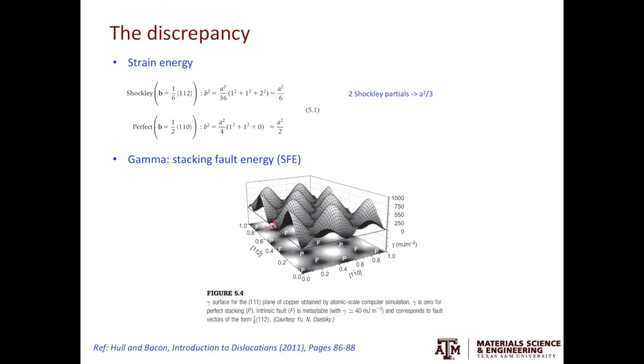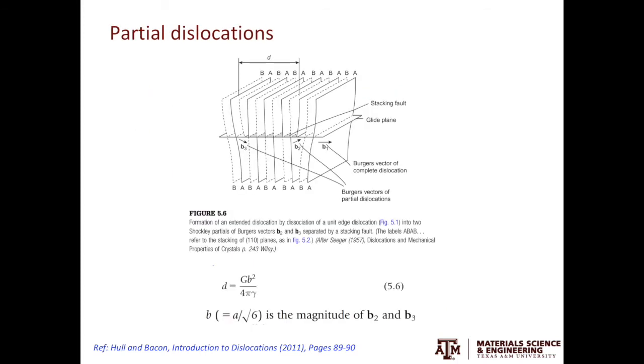Now, let's explain why we have such discrepancy. In the model on the top, we're looking at the stacking of 110 planes. 110 planes have AB AB stacking. In the model, B1 is the perfect dislocation, then B2 and B3 are the partial dislocations.